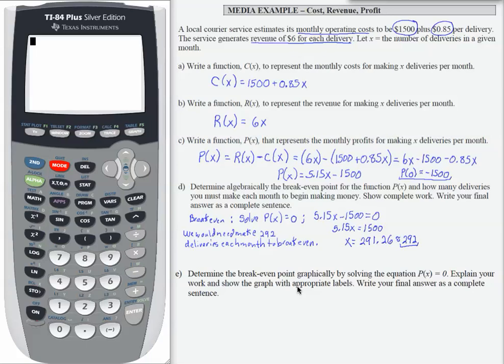So let's use our graphing calculator and go to y equals. If there's anything in your list, go ahead and clear that out. Also make sure that your plot 1 is not highlighted. If it is, you need to move your arrow up to the plot, hit enter, and then move back down to unhighlight, because that turns on your stat plot, which we do not want.